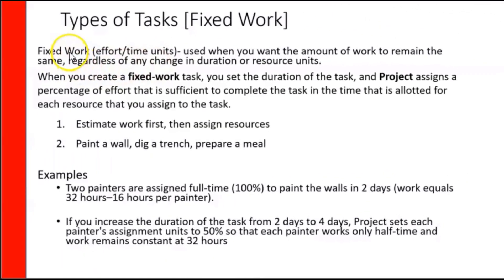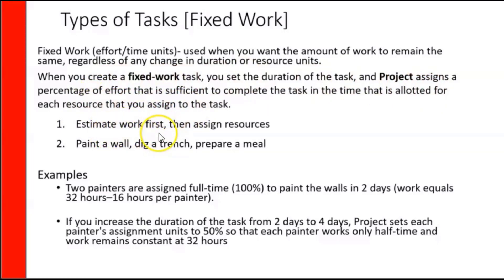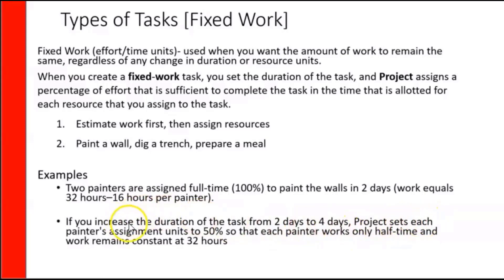With fixed work, the work remains constant. When you create a fixed work task, you set the duration of the task and project assigns a percentage of effort sufficient to complete the task in the time allotted for each resource assigned. So you should normally estimate work first and then assign resources. For instance, you have two painters assigned full time to paint the walls in two days — work equals 32 hours, 16 hours per painter. If you increase the duration from two days to four days, project sets each painter's assignment units to 50% so each painter works only half time, and the work remains constant at 32 hours.